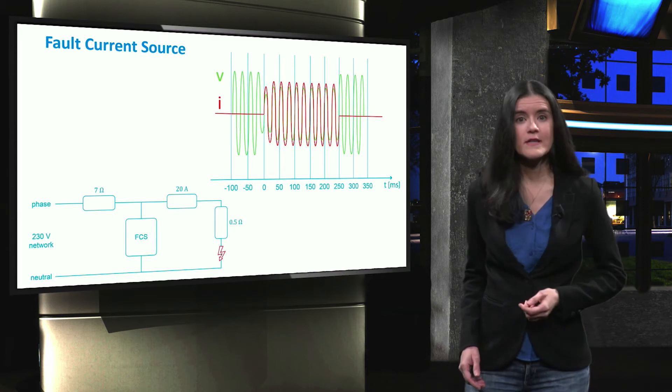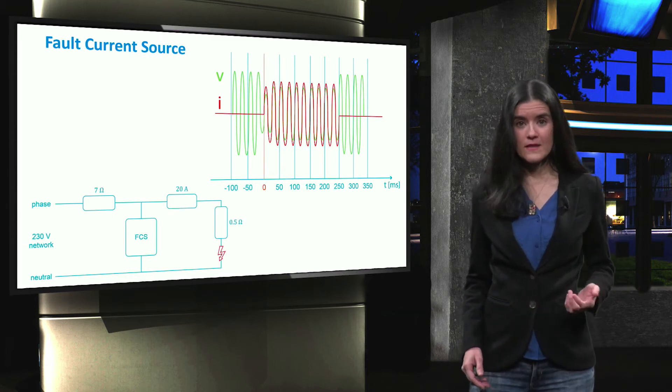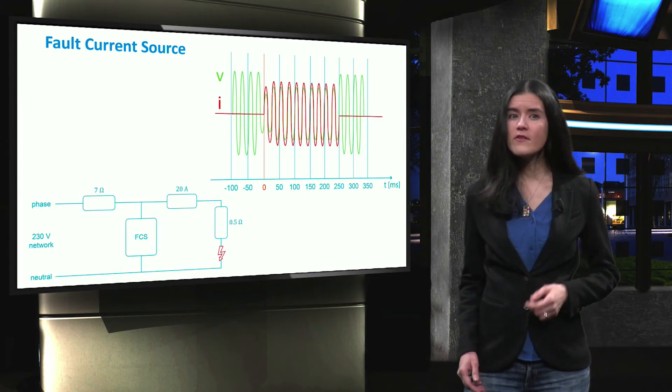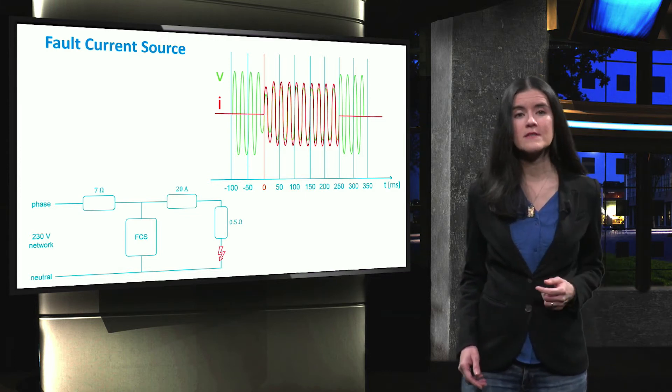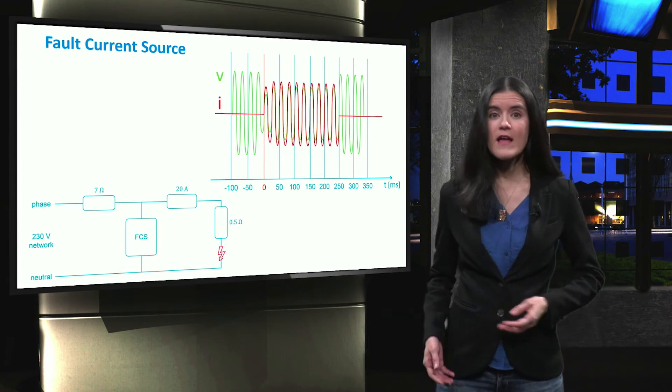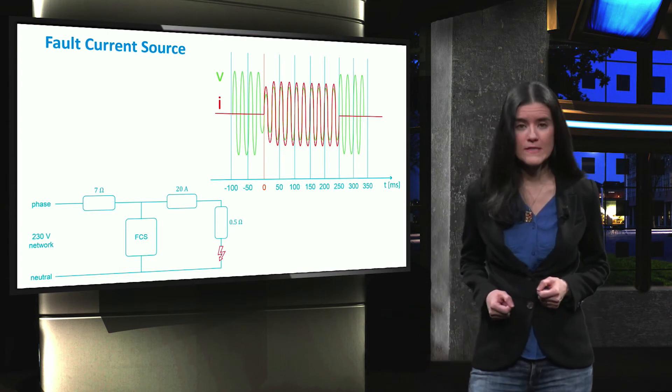When the fault occurs at t equals zero seconds, the fault current source immediately increases its current. As a result, the voltage increases and the fault is detected.